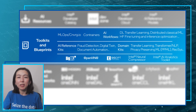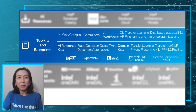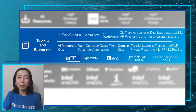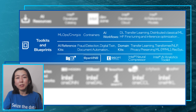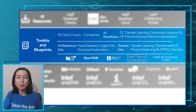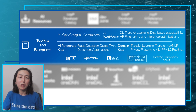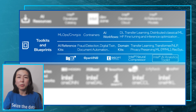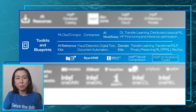At the toolkits and blueprints level, we provide various tools like BigDL for big data processing, OpenVINO for high-performance inference, SigOpt for model tuning, Intel Neural Compressor for model compression, and AIKit that bundles all the optimized libraries and frameworks in one package.